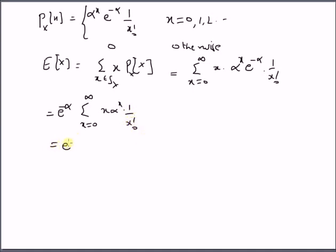This equals e^(-α). For x = 0, this is 0. So we have 0 plus, for x = 1, we have α times 1/1!.